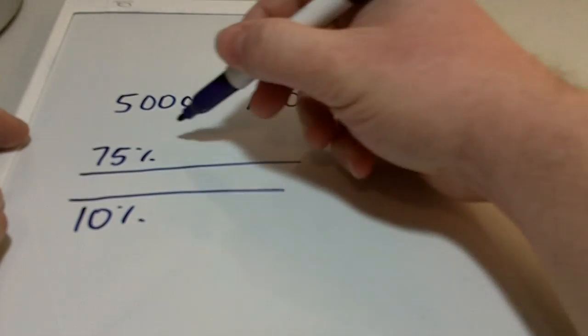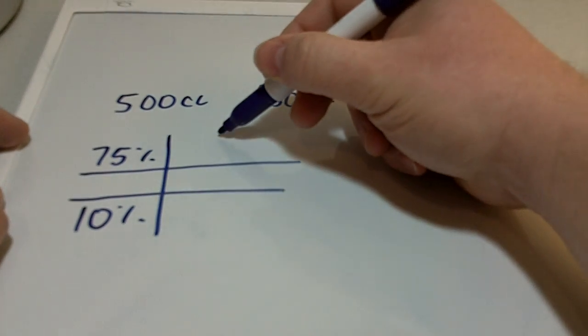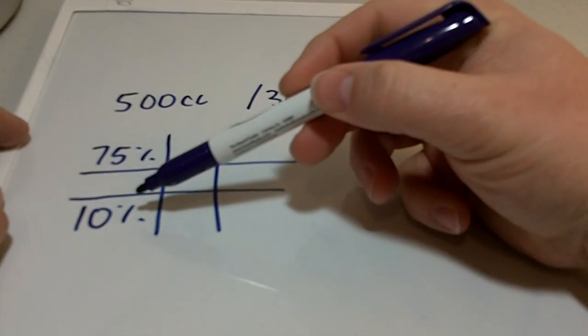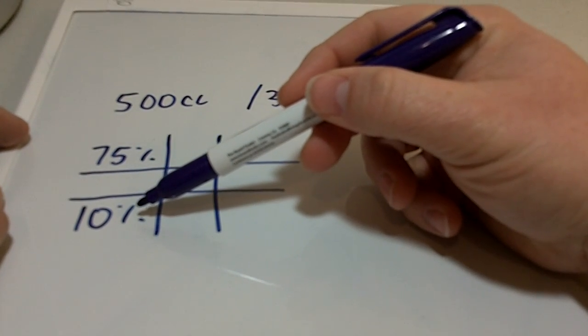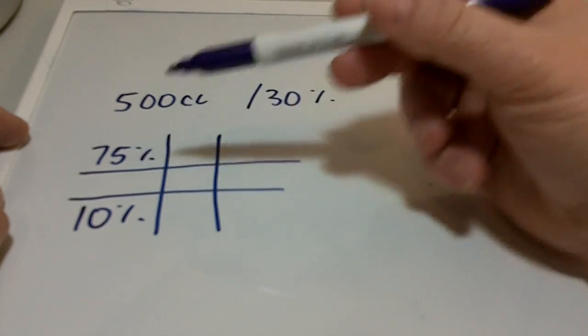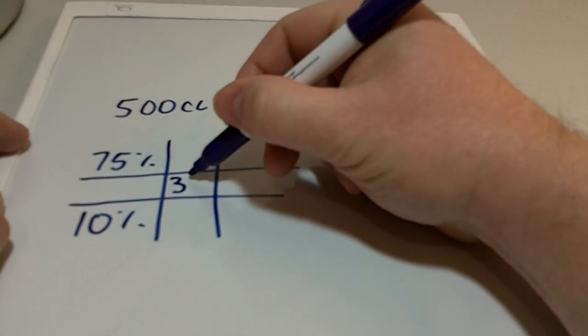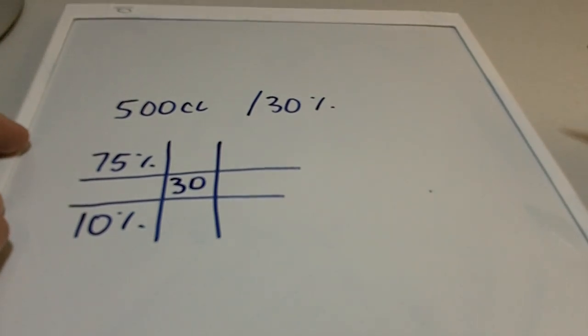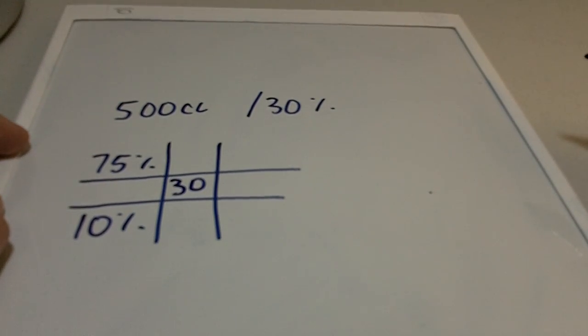We'll get started on that with a tic-tac-toe grid here. You put your lower strength you're working with in the bottom left, higher strength in the top left, and then you put your desired solution in the middle.